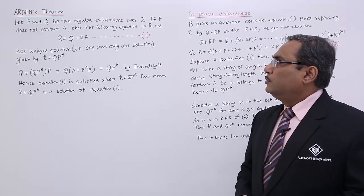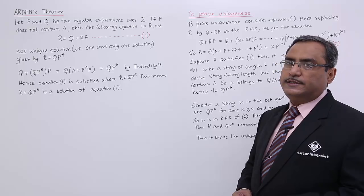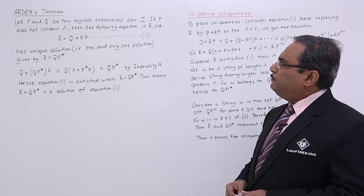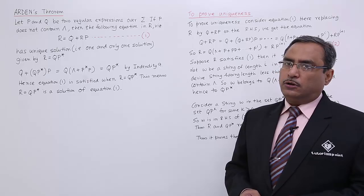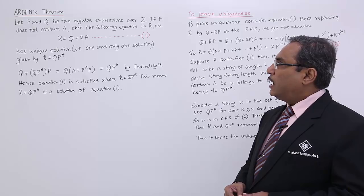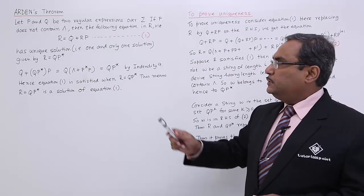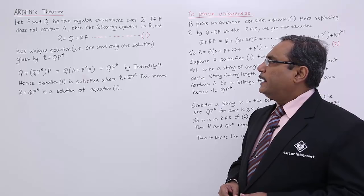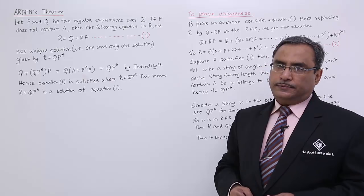Let P and Q be two regular expressions over sigma. We know that sigma is a set of input alphabets. If P does not contain kappa, meaning P is not containing kappa, then the following equation in R — that is R = Q + RP (equation 1) — has a unique solution, one and only one solution, given by R = QP*. That is the theorem.